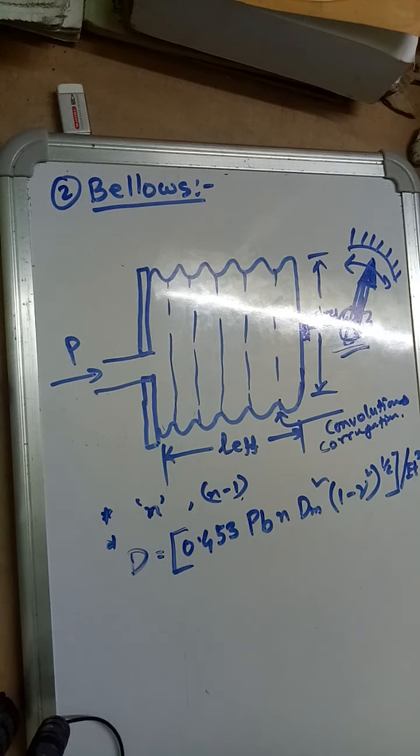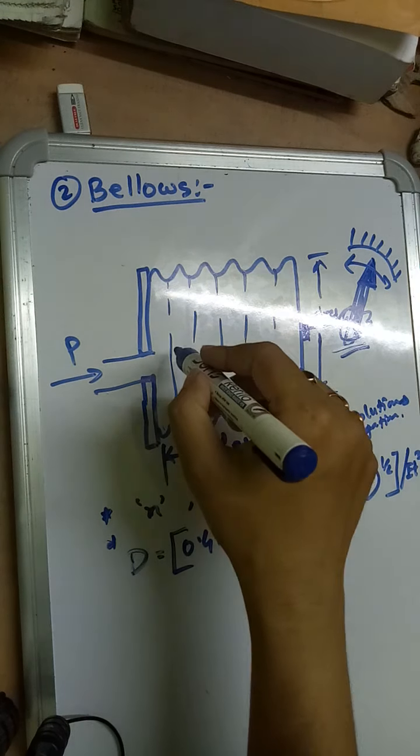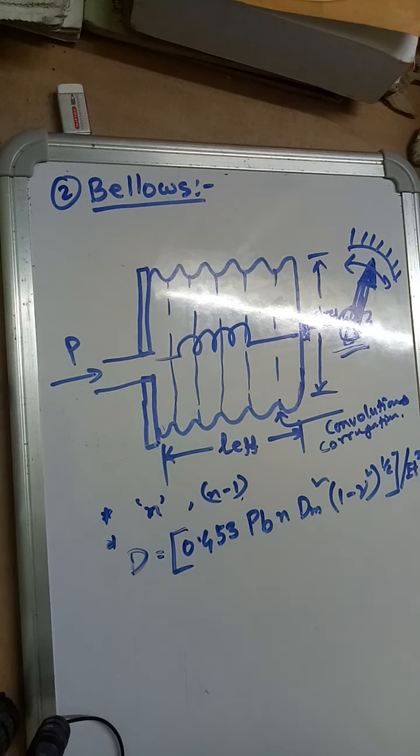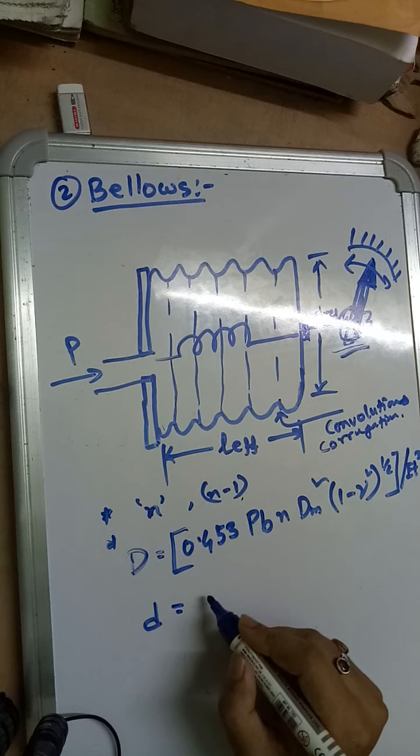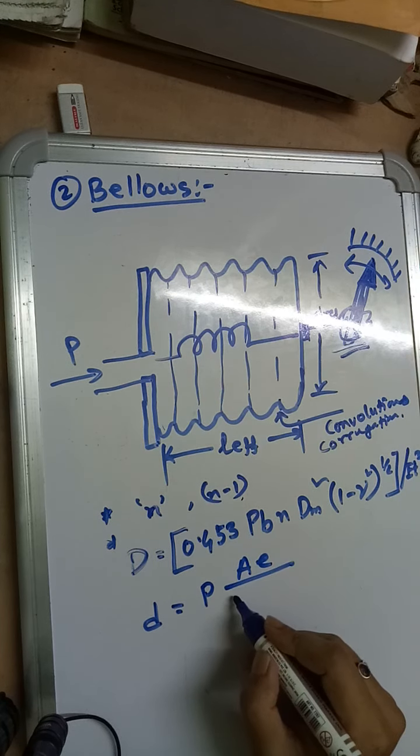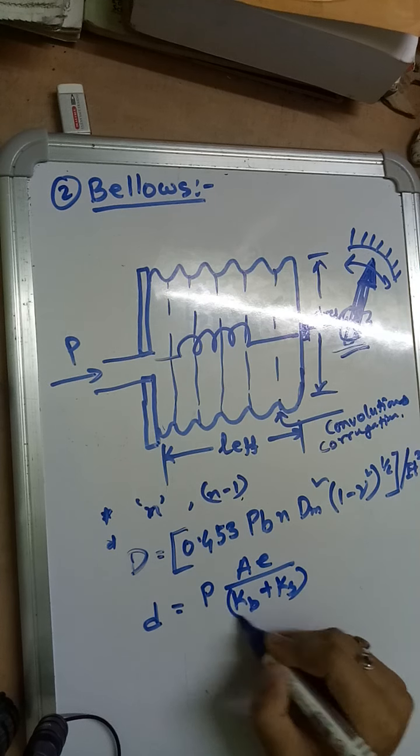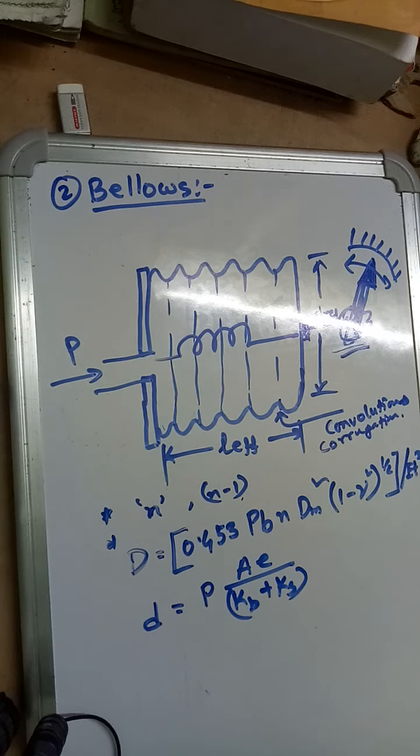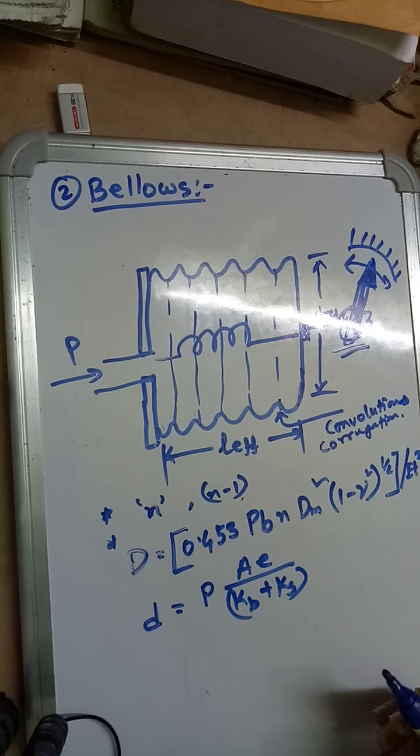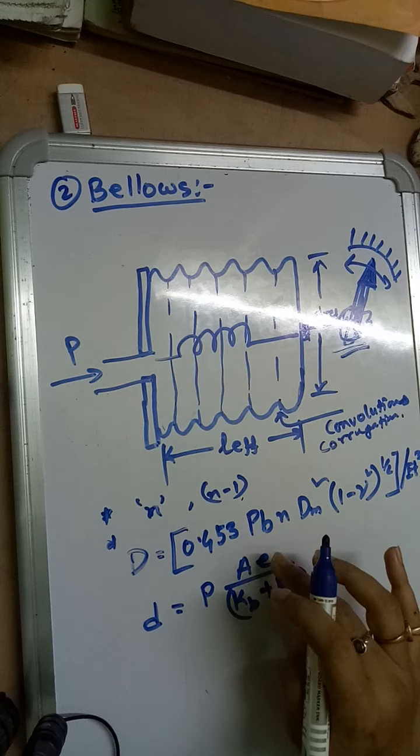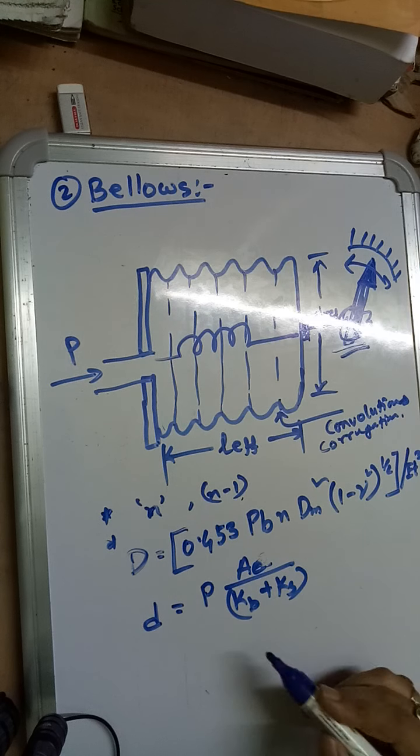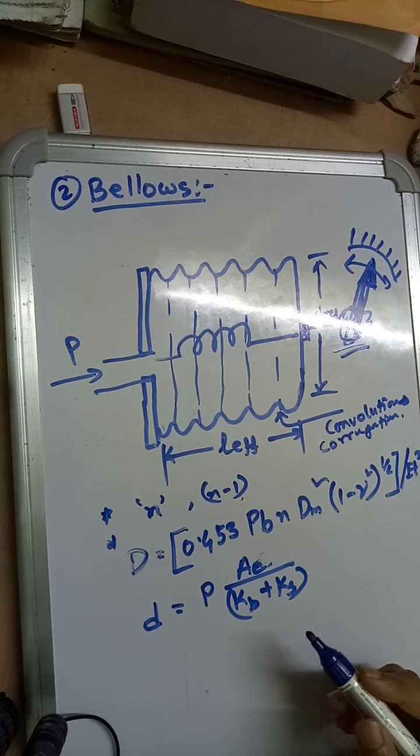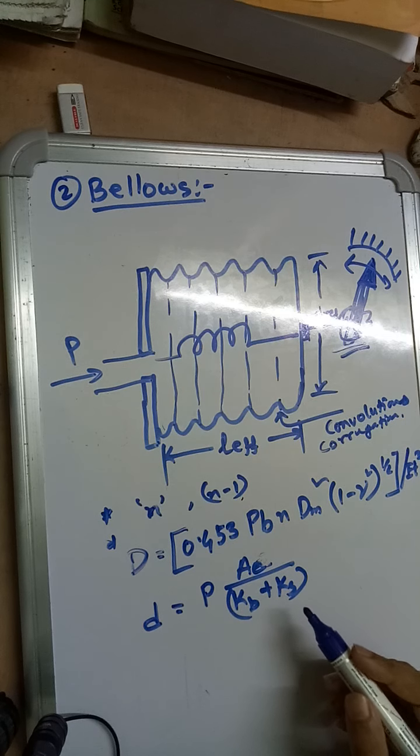This is one empirical formula. There are several empirical formulas. The deflection of bellows when supported or opposed by spring - if the bellows is connected to a spring inside - is given by d = (p × A_e) / (k_b + k_s), where d equals deflection of bellows, p equals applied pressure, A_e is the effective area of bellows, k_b equals force constant or spring rate of bellows, and k_s equals force constant or spring rate of the retaining spring.